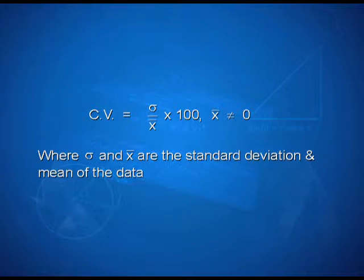The measure of variability which is independent of units is called coefficient of variation denoted as CV. The coefficient of variation is defined as CV is equal to sigma upon x bar into 100, where x bar is not equal to 0, and sigma and x bar are the standard deviation and mean of the data. For comparing the variability or dispersion of two series, we calculate the coefficient of variations for each series. The series having greater coefficient of variation is said to be more variable than the other. The series having lesser CV is said to be more consistent than the other.